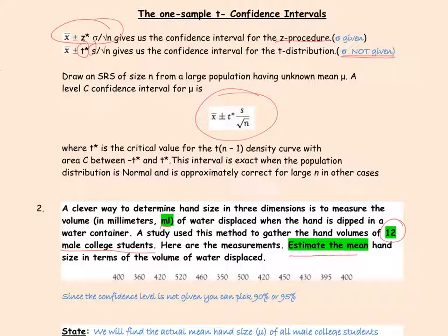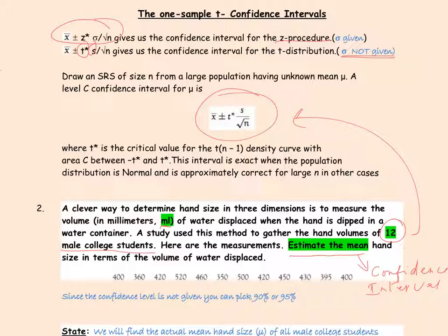This is the important part — we need to read the question carefully. It says estimate the mean hand size in terms of the volume of water displaced. The moment it says estimate the mean, we need to find a confidence interval. A confidence interval is a range of values found using the t-procedure formula, because clearly sigma is not given anywhere in the problem. If sigma is not given, we use s instead of sigma, which means we use a t-procedure.